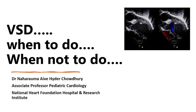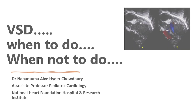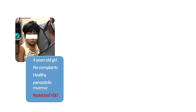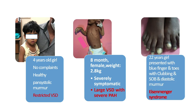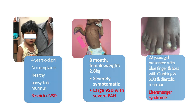Today I'm going to share about VSD — when to do and when not to do. There is a variable spectrum: this is an asymptomatic child with a restrictive VSD, and this is a very symptomatic child due to a large VSD with severe pulmonary hypertension. And this is the unfortunate case who developed Eisenmenger syndrome at 22 years.